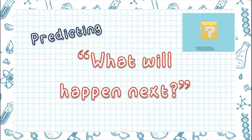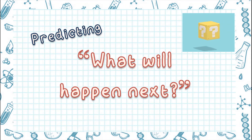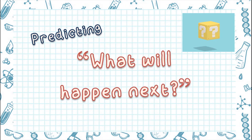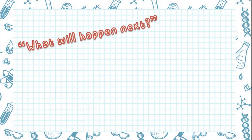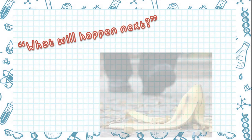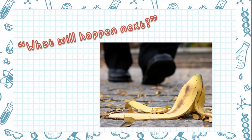Next, let's go to predicting. Predicting is when you use what you know to tell what will happen next. This is called a prediction. Look at this picture. What do you think will happen next?